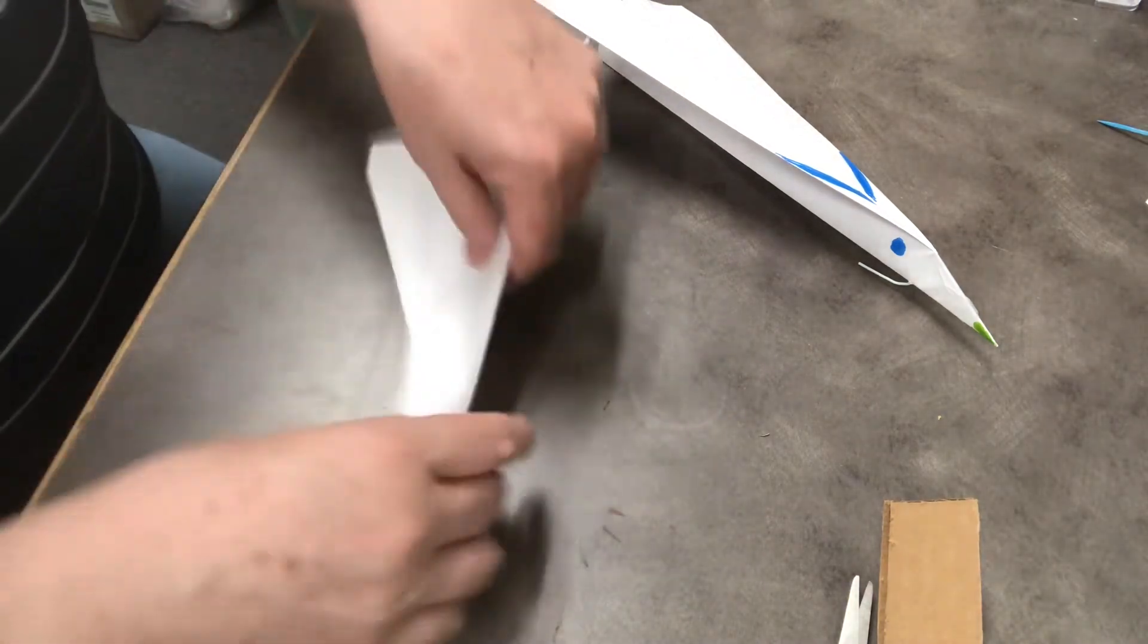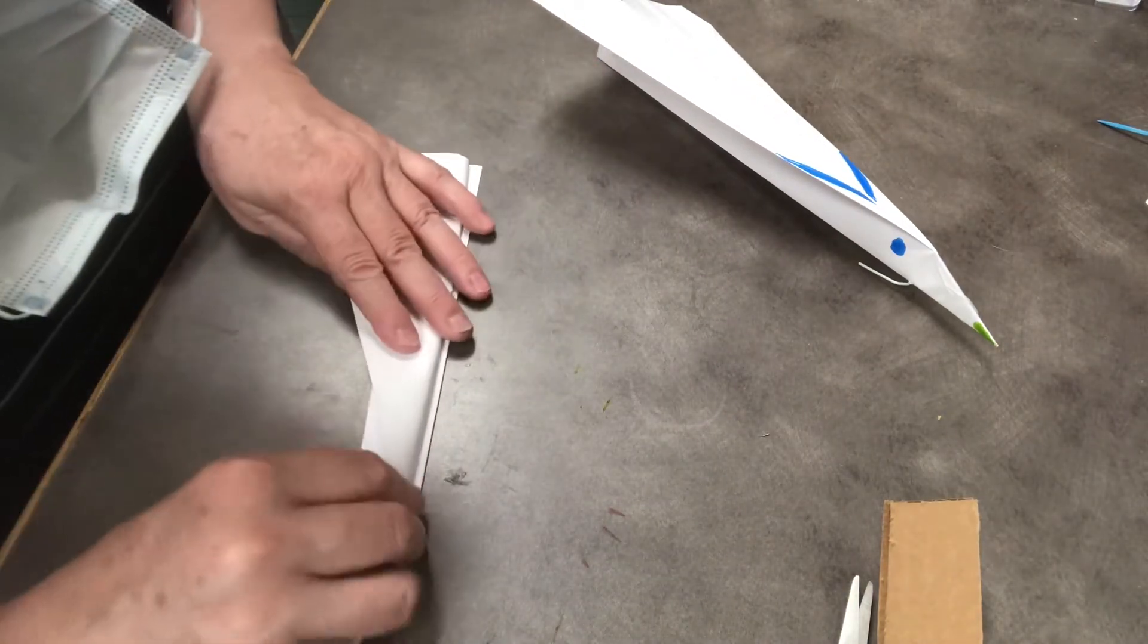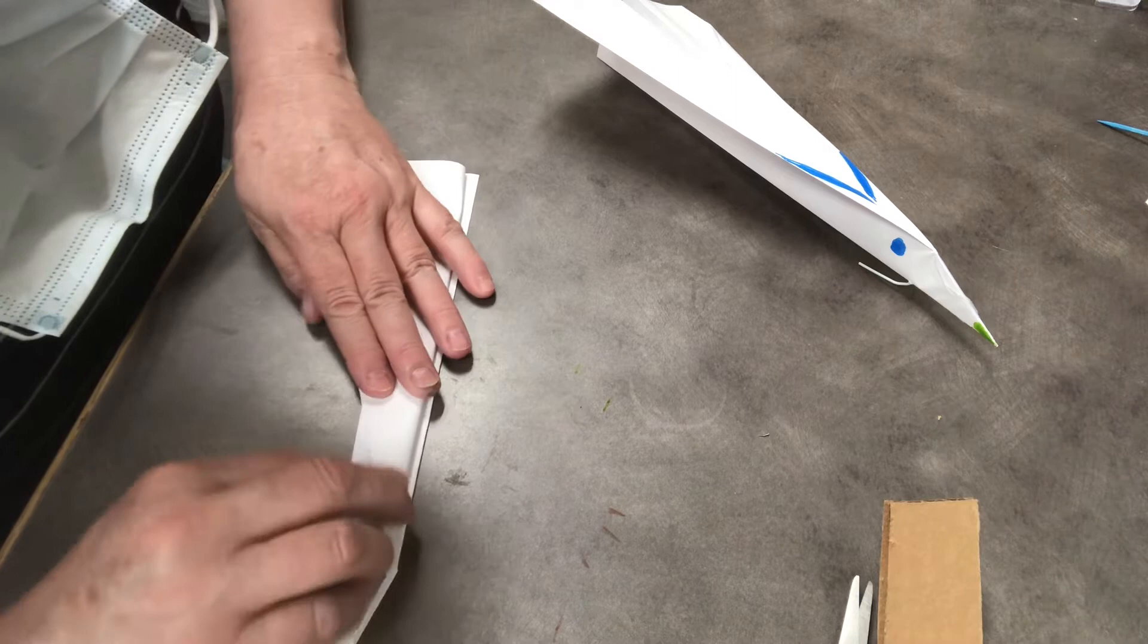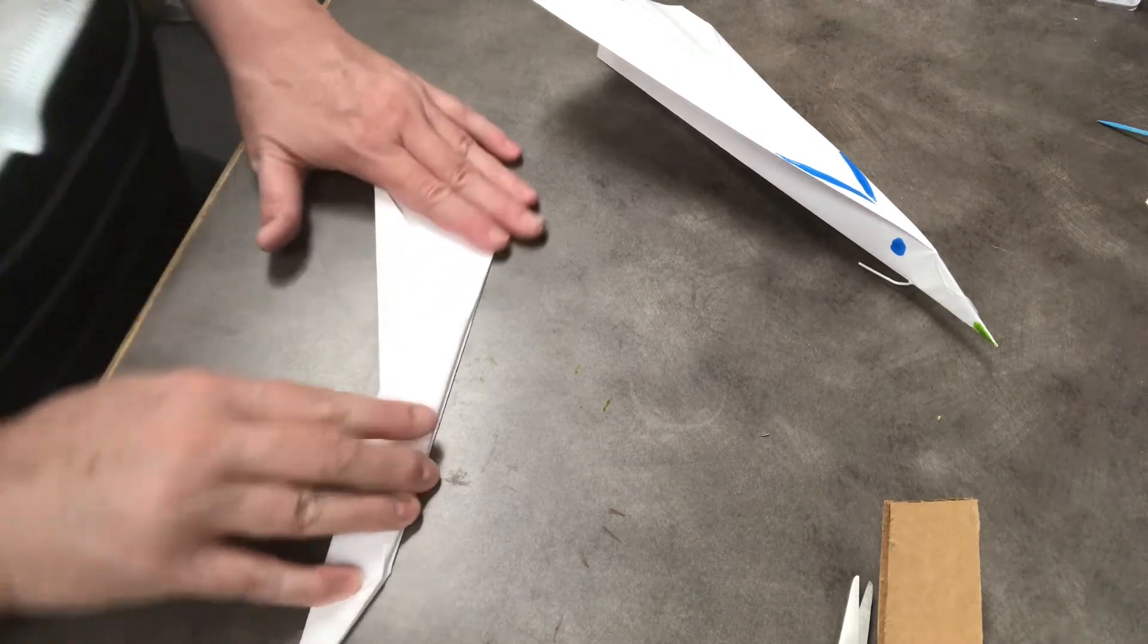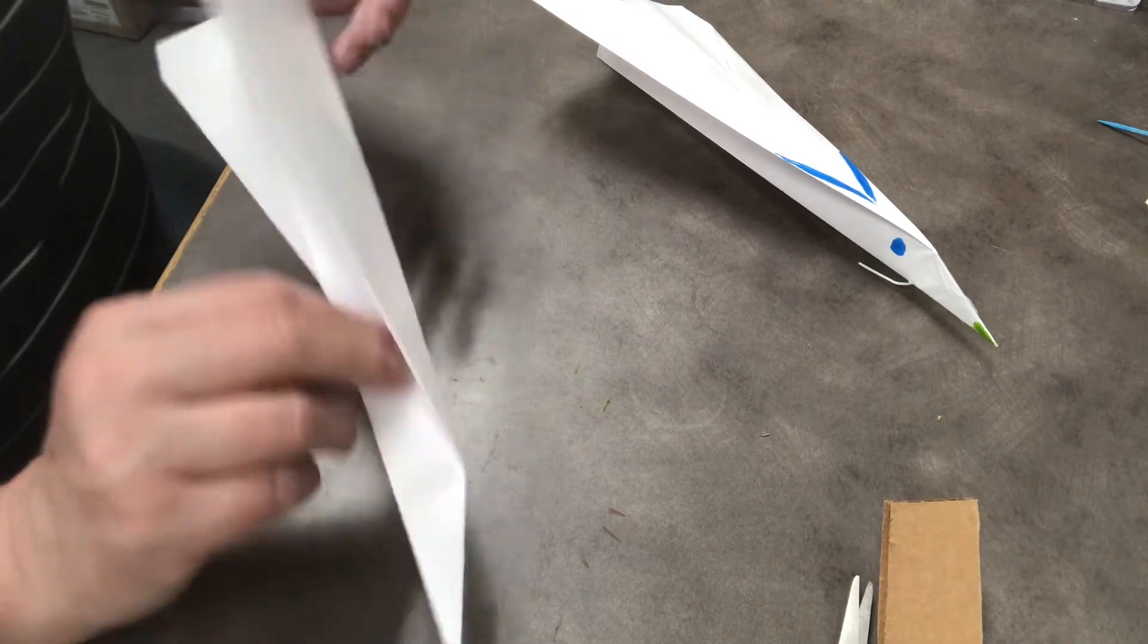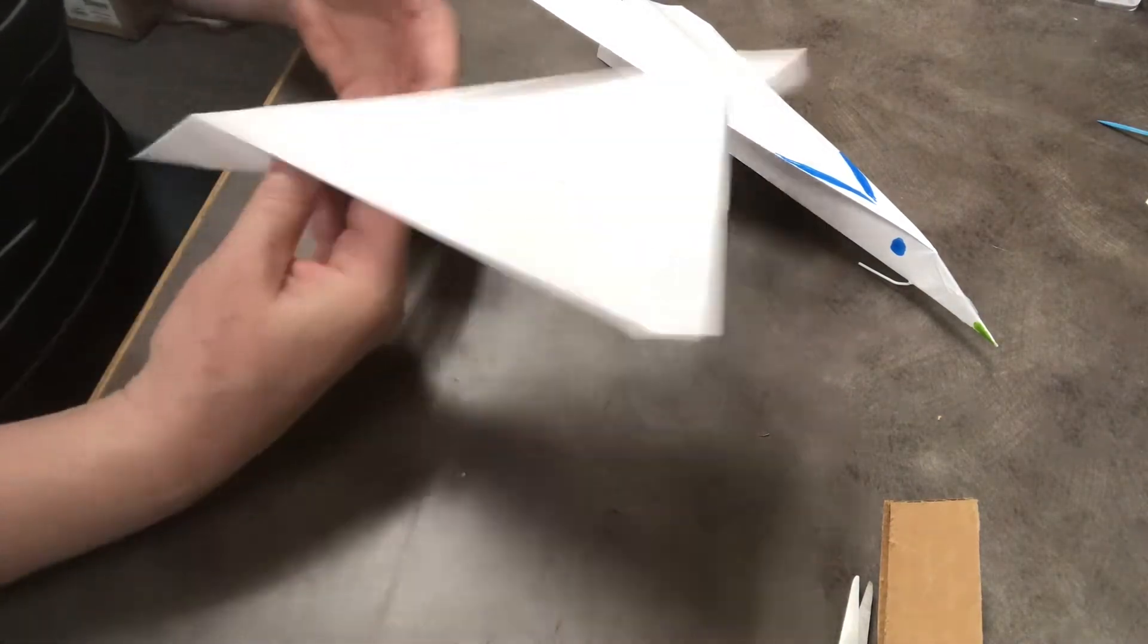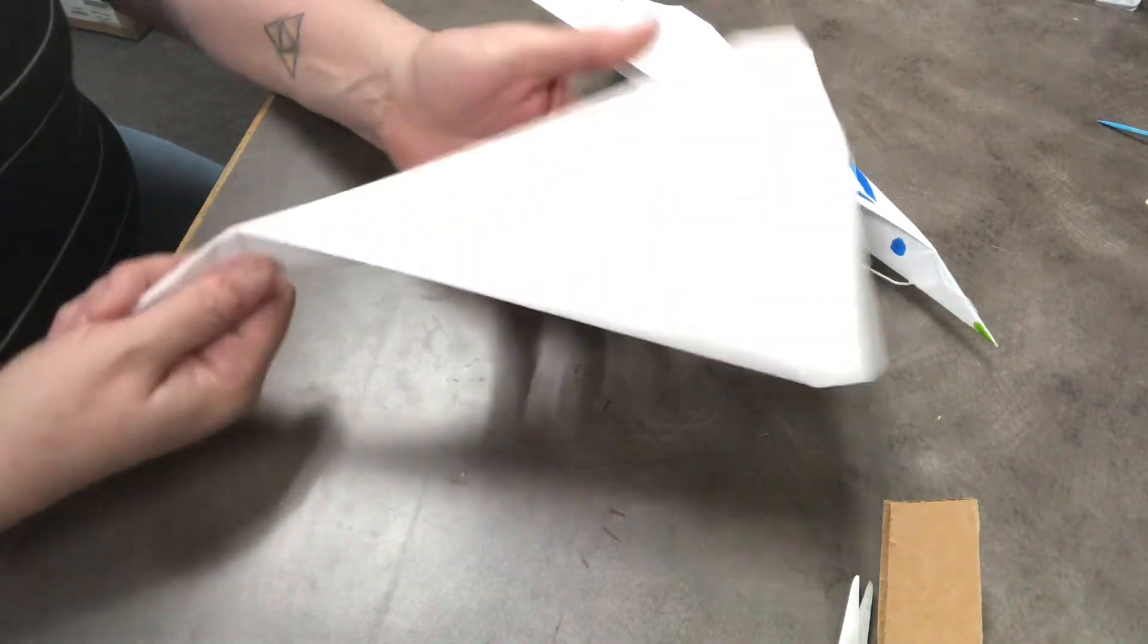Now I'm going to flip it over and do the same thing to the other side again. And I want them to be the same, so line them up. There we go, and crease it down. There we go. So that's pretty much your plane. Long, pretty long one, nice and sleek like a jet.